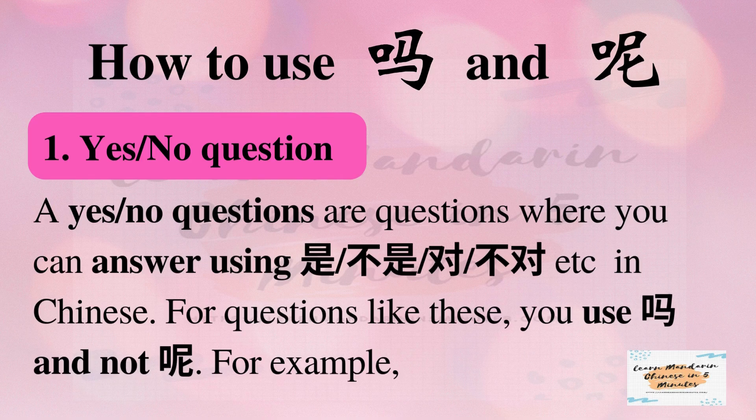Number one: yes or no questions. Yes or no questions are questions where you can answer using 是, 不是, 对, 不对, etc. in Chinese. For questions like these, you use 吗 and not 呢. For example: